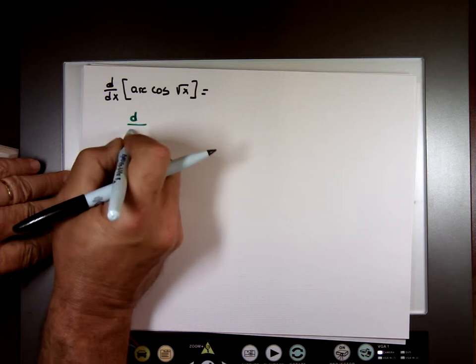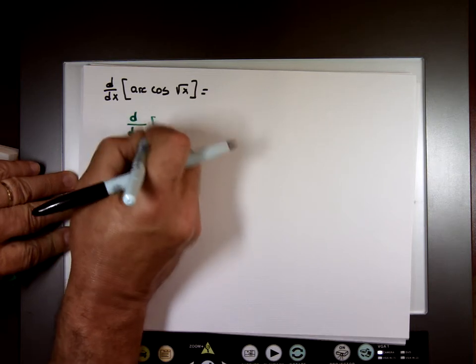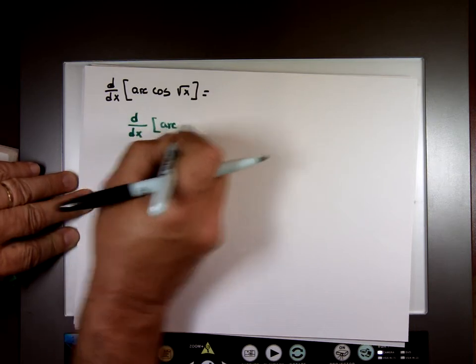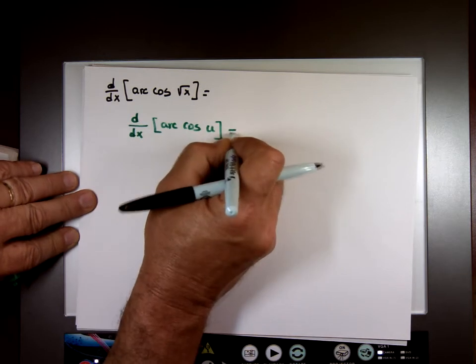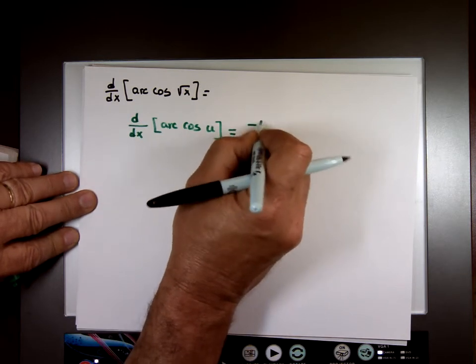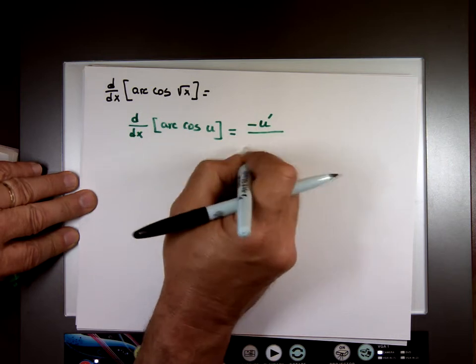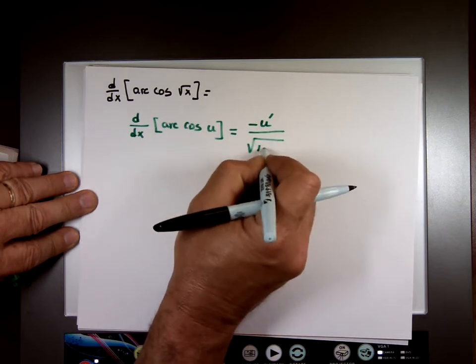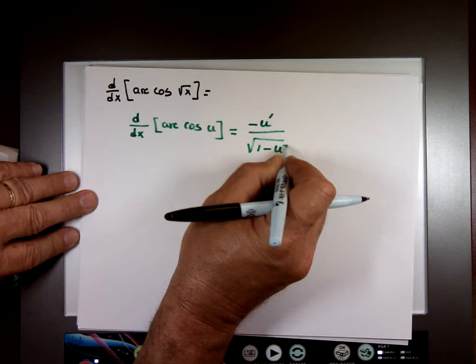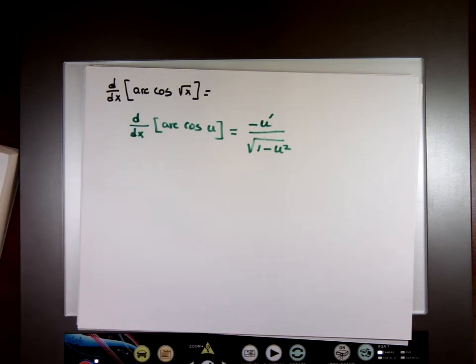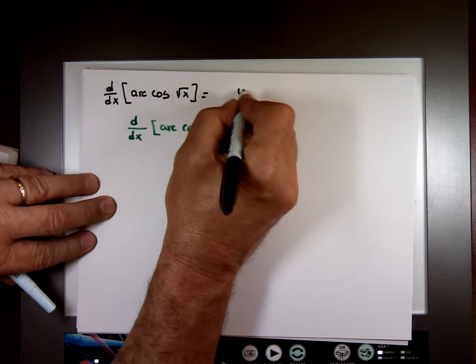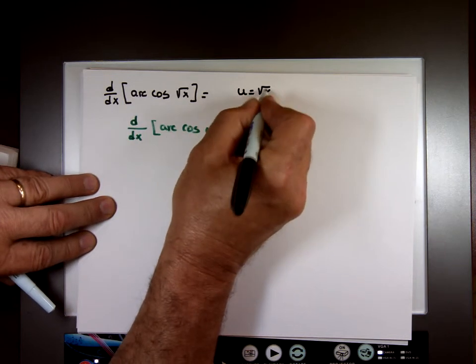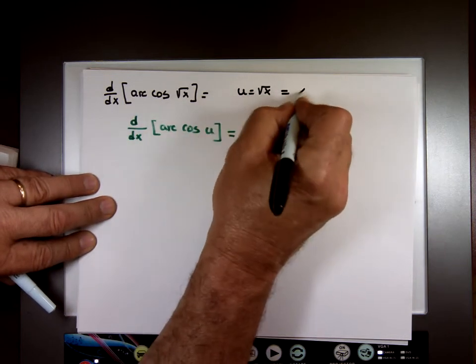What is the derivative d dx of arc cosine the square root of x? According to our book, the derivative of arc cosine of u is negative u prime over the square root of 1 minus u squared. So u here is the square root of x,